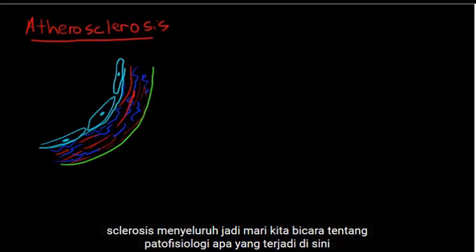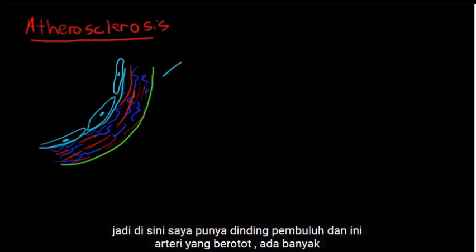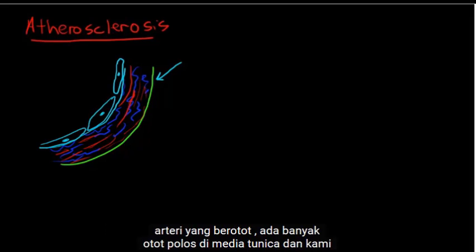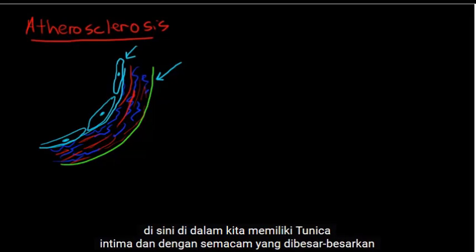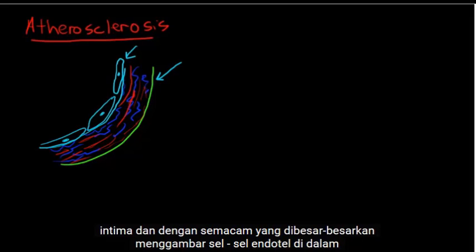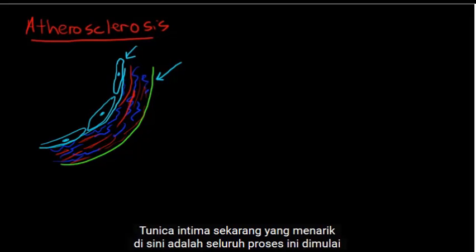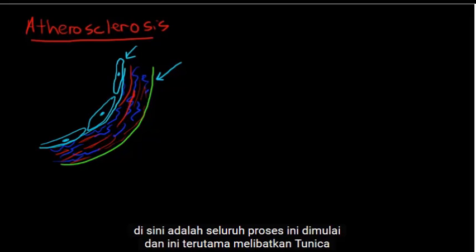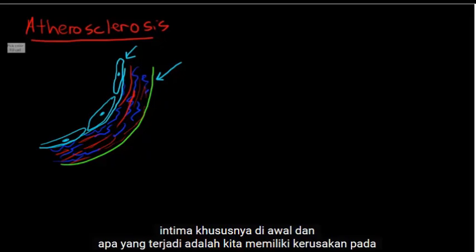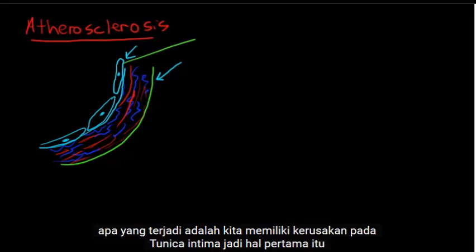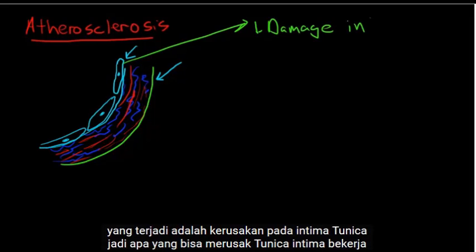Now let's talk about atherosclerosis — the pathophysiology. Here I have a vessel wall of a muscular artery with lots of smooth muscle in the tunica media, the tunica adventitia on the outside, and the tunica intima with an exaggerated drawing of the endothelial cells on the inside. This whole process starts in and primarily involves the tunica intima, particularly in the beginning. What happens is we have damage to the tunica intima.